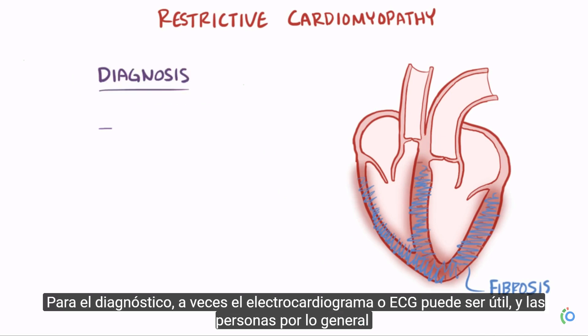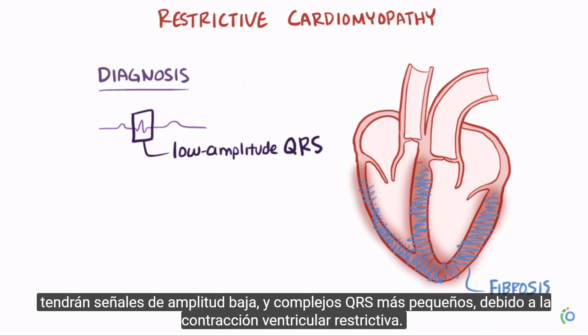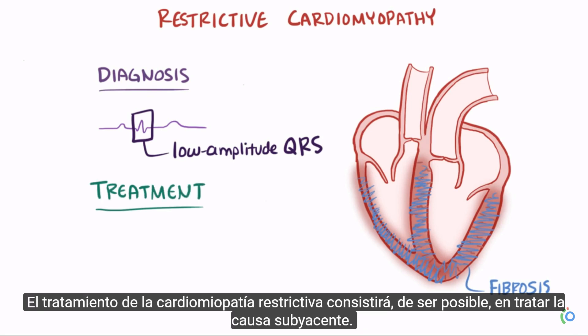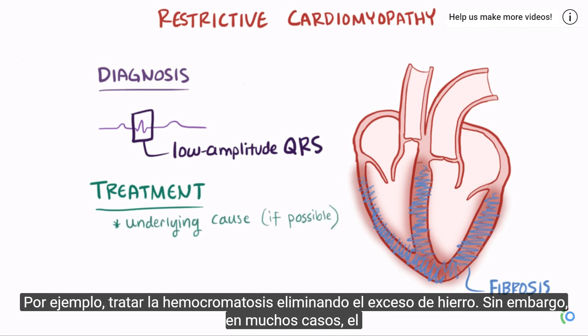For diagnosis, sometimes an electrocardiogram, or ECG, can be helpful, and these people will often have low amplitude signals and smaller QRS complexes, due to restricted ventricular contraction. The treatment for restrictive cardiomyopathy will be to treat the underlying cause, if possible. For example, treating hemochromatosis by removing excess iron.